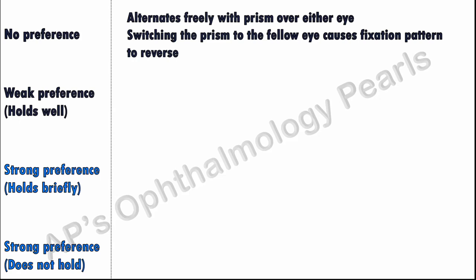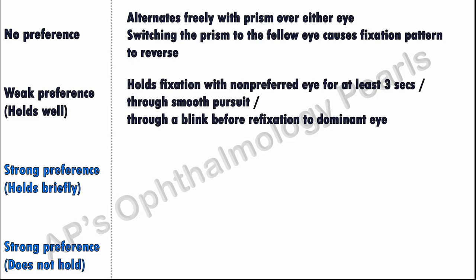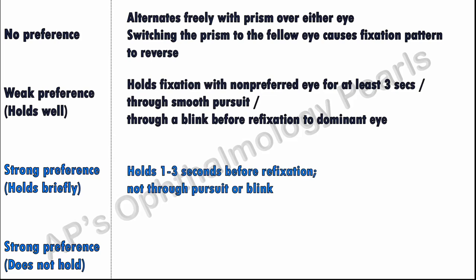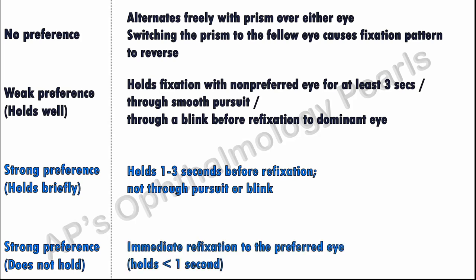"Holds well" means the non-preferred eye holds fixation for at least three seconds through a smooth pursuit or through a blink before refixation to the dominant eye. "Holds briefly" means the non-preferred eye holds fixation for one to three seconds before refixation, not through a pursuit or blink. "Does not hold" means there is immediate refixation to the preferred eye. A strong fixation preference is believed to indicate the possibility of amblyopia.